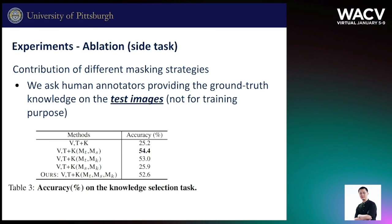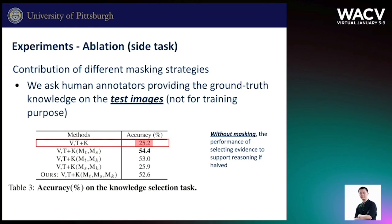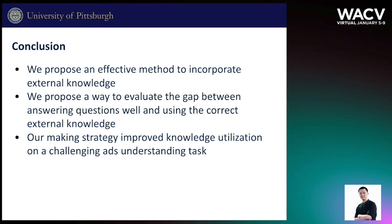We ask human annotators to provide ground truth knowledge on the tested images, then check if our models select the same kinds of knowledge as human beings. We see that without masking, the performance of selecting evidence to support reasoning is halved. In conclusion, we propose an effective method to incorporate external knowledge, a way to evaluate the gap between answering questions well and using the correct external knowledge. Our masking strategy improves knowledge utilization on a challenging ads understanding task. We believe visual reasoning does not merely mean predicting the answer, but we have to uncover more underlying mechanisms.